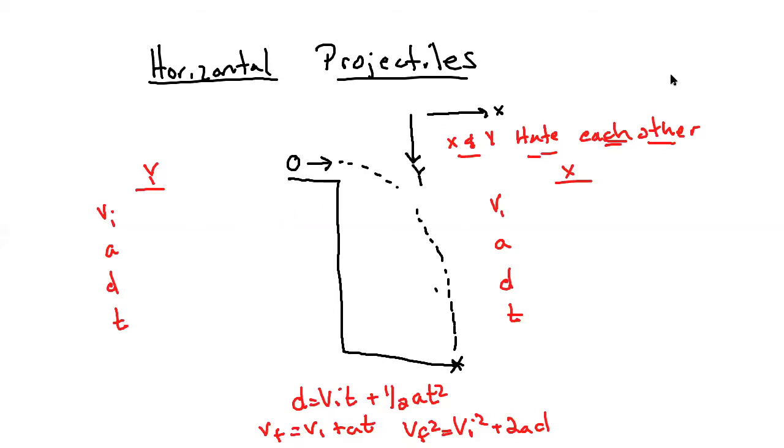Now there's going to be some things that are always true for horizontal projectiles. So let's put the always in first. Everything in blue is going to be always. Now on a very basic level, they call it horizontal projectile because all of the velocity or all of the motion is in the X direction.